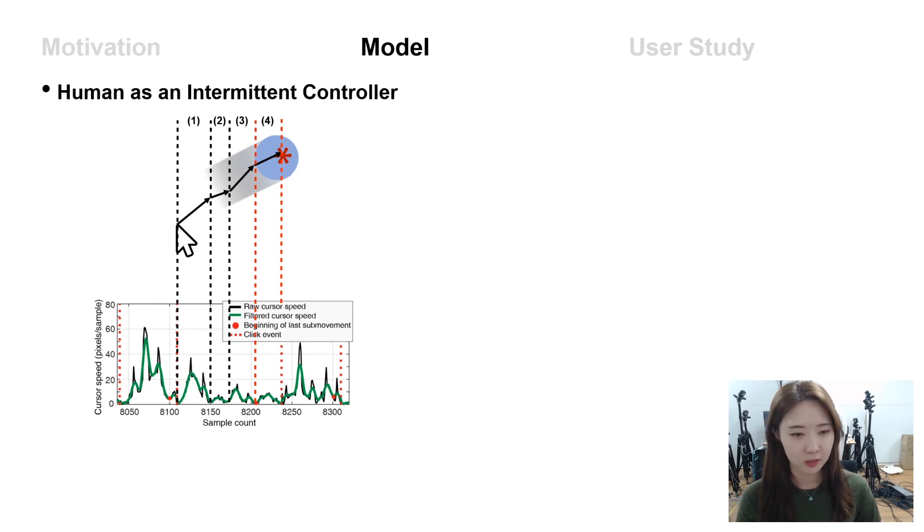Then, when the click planning occurs, among those sub-movements, we assume that the click planning occurs in the last sub-movement just before the click. Because the former motor plans are replaced by the updated motor plan, this is because even if the user plans the click during the sub-movement before the last sub-movement, by the intermittent control process, the former motor plan is replaced and the existing click action planning becomes useless.